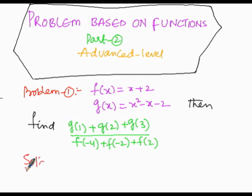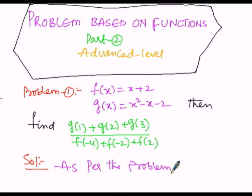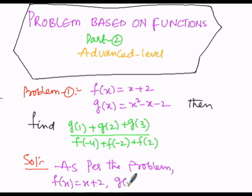According to the problem, the two functions given to us are f(x) and g(x). Here f(x) is given as x plus 2, and g(x) is given as x squared minus x minus 2. There are 3 terms in g(x) and 2 terms in f(x).